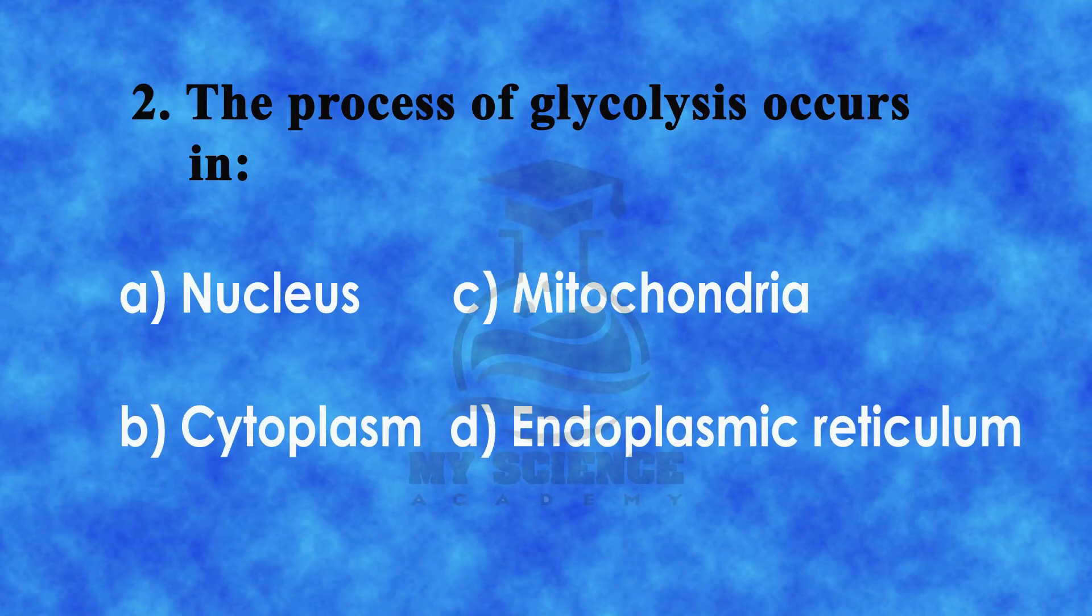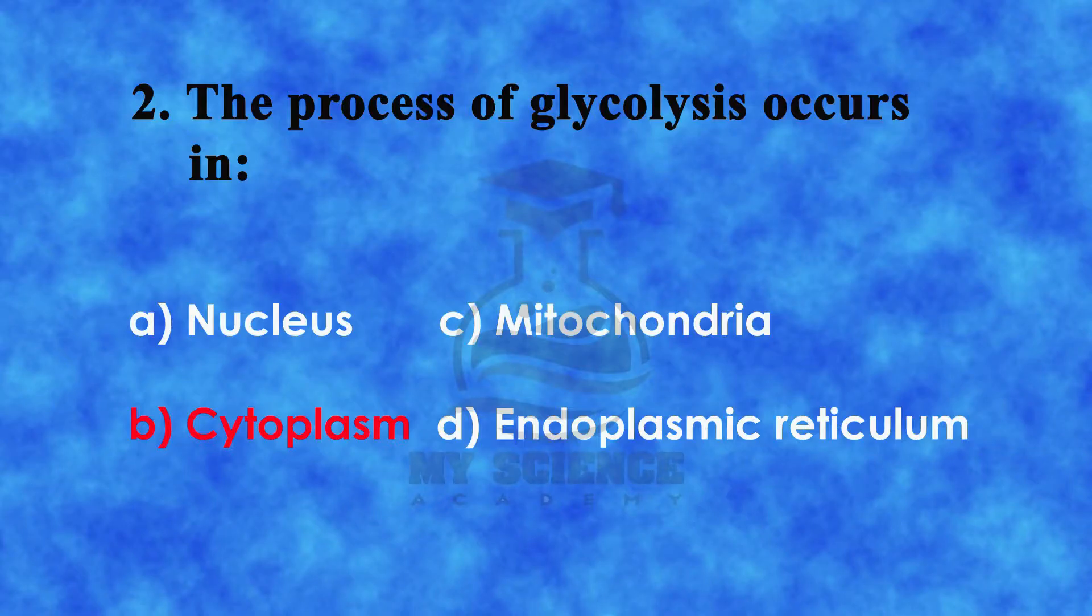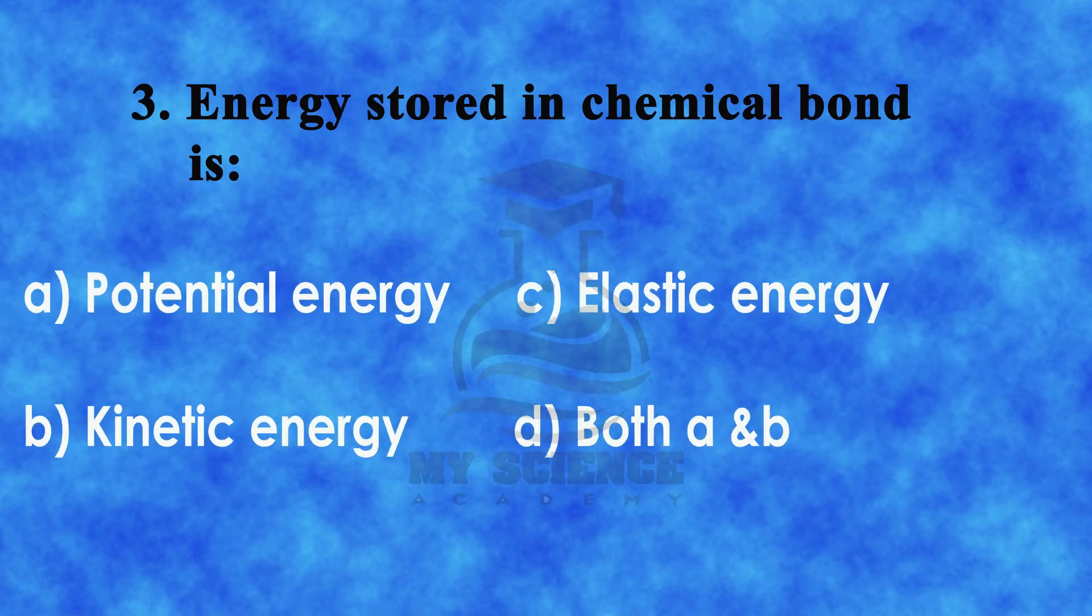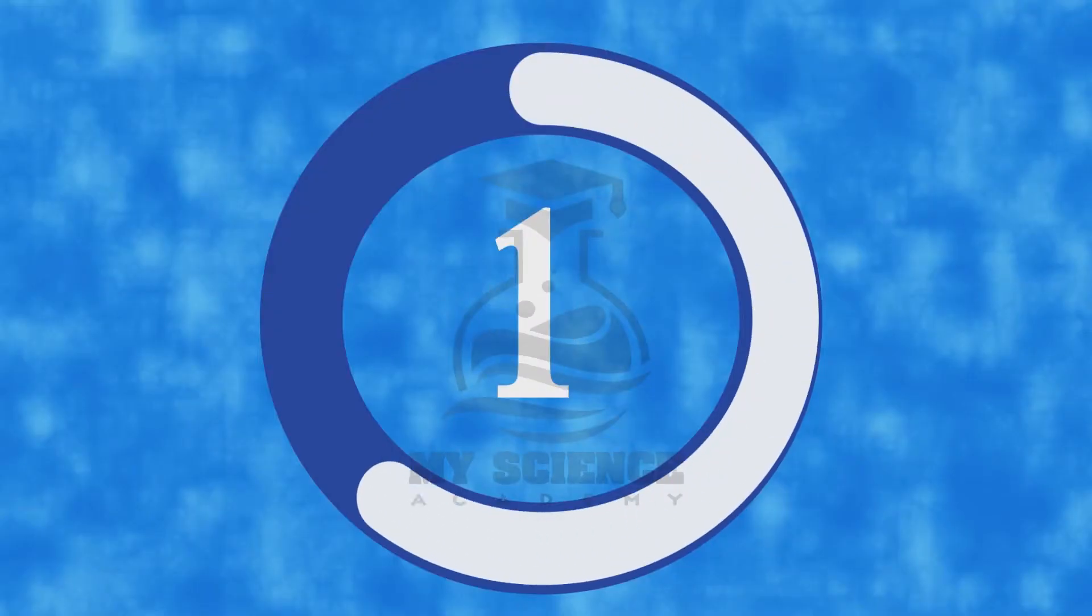Question 2: The process of glycolysis occurs in: a) nucleus, b) cytoplasm, c) mitochondria, d) endoplasmic reticulum. The correct answer is b) cytoplasm. Question 3: Energy stored in chemical bond is: a) potential energy, b) kinetic energy, c) elastic energy, or d) both a and b.